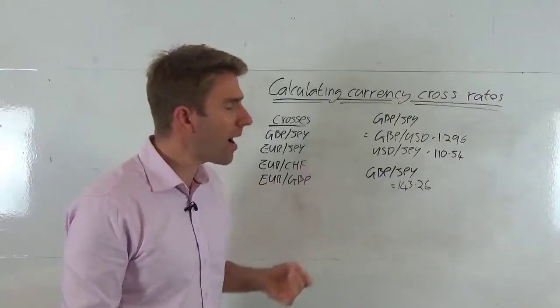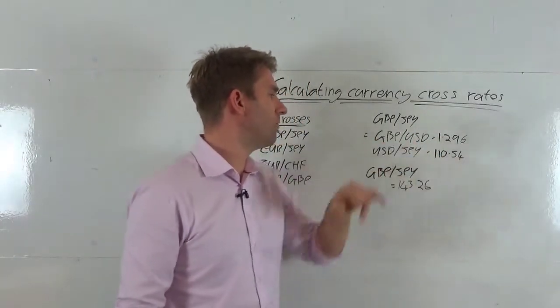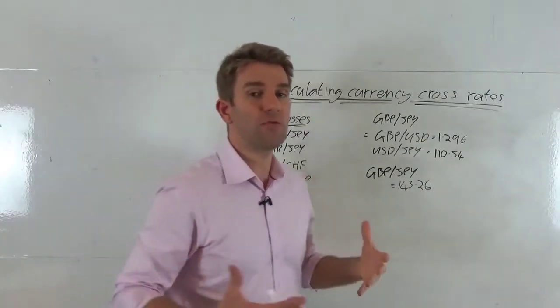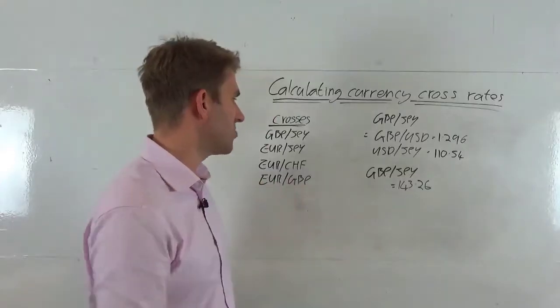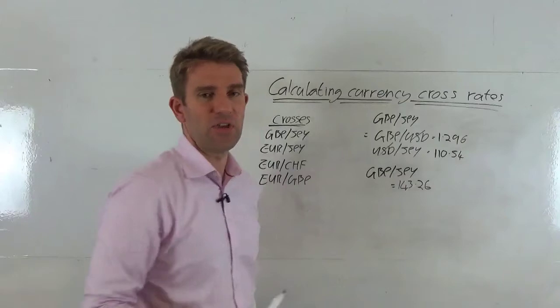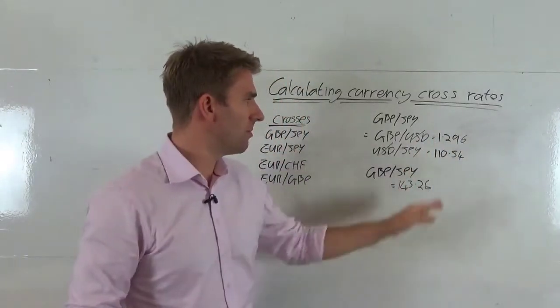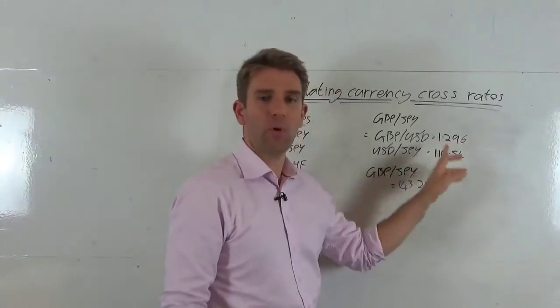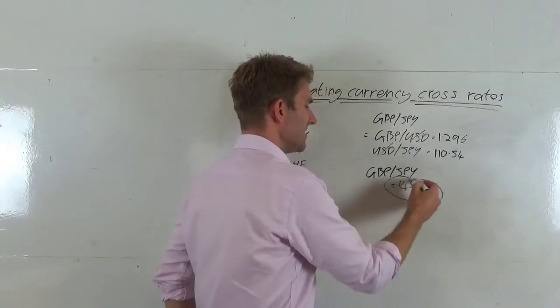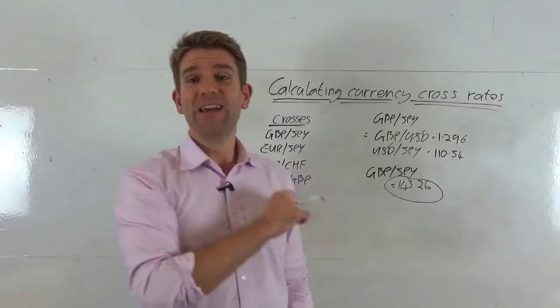Now we look at the USD/JPY currency pair price. USD/JPY is trading at 110.54. So what we've got to do is use those two, utilize those two figures to give us our GBP/JPY. What we do is we cross off theoretically the USD component, so we're just multiplying those two together. So we multiply 1.296 by 110.54 and we get 143.26. So that is our GBP/JPY price.